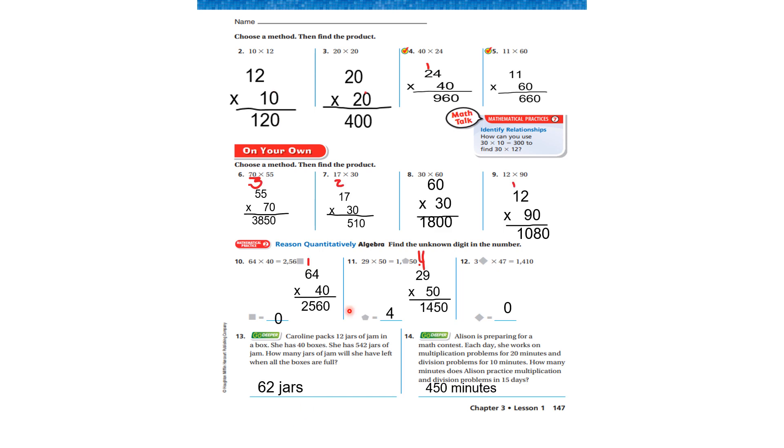See how you did. Seventeen times thirty. I moved the zero down. Three times seven is twenty-one. Carry the two. Three times one is three. Plus two is five. Five hundred and ten. Thirty times sixty. I moved the zero down. Three times zero is zero. Three times six is eighteen. Twelve times ninety. I moved the zero down. Nine times two is eighteen. Carry the one. Nine times one is nine. Plus one is ten.